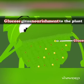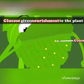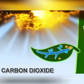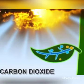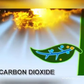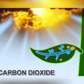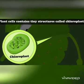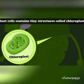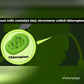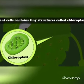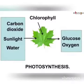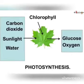Leaves have tiny pores called stomata through which carbon dioxide enters the plant. Plant cells contain a tiny structure called chloroplast that contains chlorophyll.